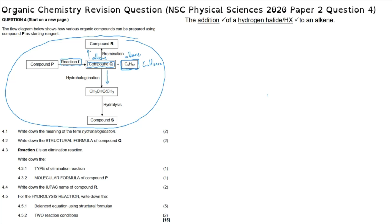Question 4.1 asks us to write down the meaning of the term hydrohalogenation. The correct meaning is the addition of a hydrogen halide (HX) to an alkene. So hydrohalogenation occurs when we add a hydrogen combined with a halogen — a group 17 element — to an alkene.